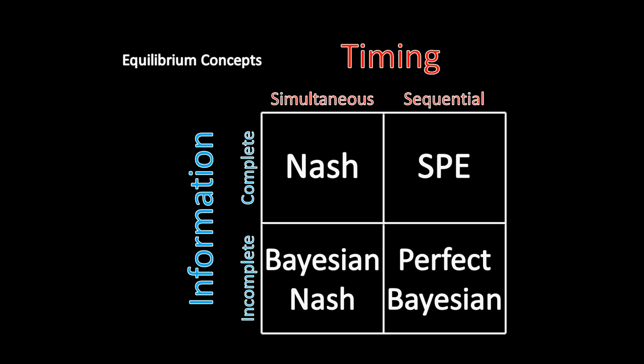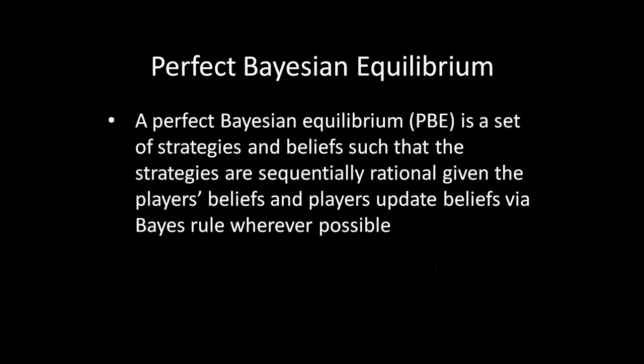This is just like what we did with Bayesian Nash Equilibrium. When working with these really complicated solution concepts, it's very important to go over the specifics of the definition before we start applying them. A Perfect Bayesian Equilibrium, or PBE, is a set of strategies and beliefs such that the strategies are sequentially rational given the player's beliefs, and players update beliefs via Bayes' rule wherever possible.